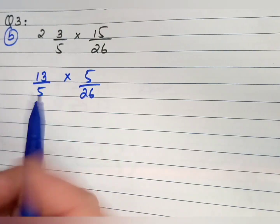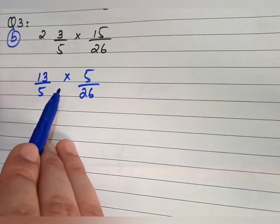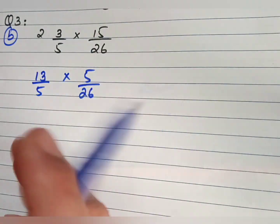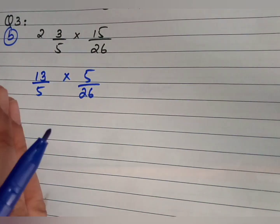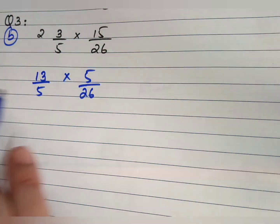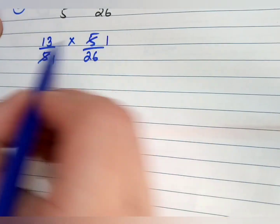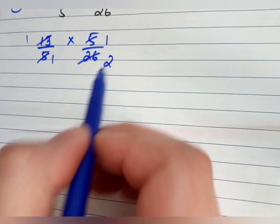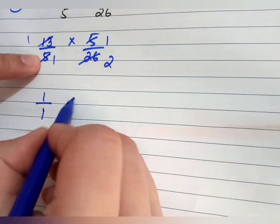Always observe the sign: if you have plus or minus, take the LCM and equalize denominators; if you have a multiplication sign, just cut out terms that share common factors or multiply directly. So there's no need to take the LCM of 25, 26, and 5. We do cross-cutting: 5 ones are 5, 5 ones are 5; 13 ones are 13, 13 twos are 26. Write down what remains after simplification.